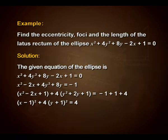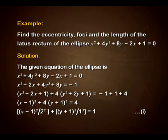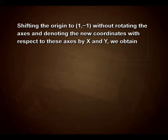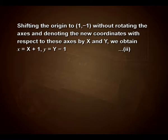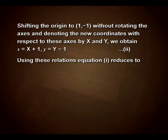That gives us (x minus 1)² plus 4 into (y plus 1)² equals 4. On simplification, we get (x minus 1)² upon 2² plus (y plus 1)² upon 1² equals 1. Take this as equation number 1. Shifting the origin to (1, minus 1) without rotating the axes and denoting the new coordinates by x and y, we obtain x equals X plus 1 and y equals Y minus 1.